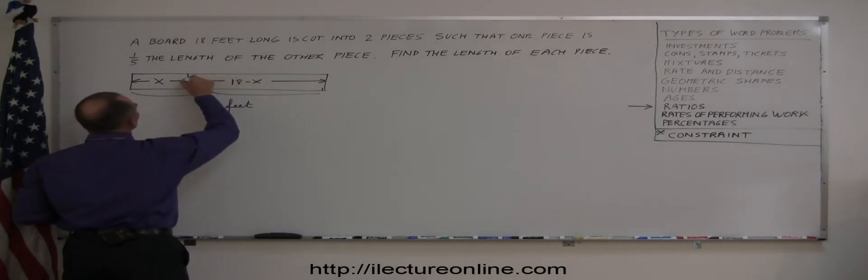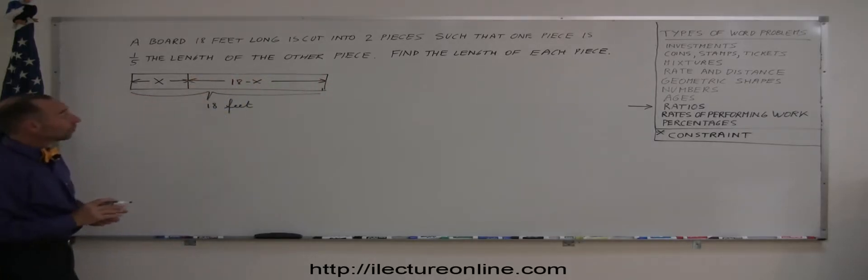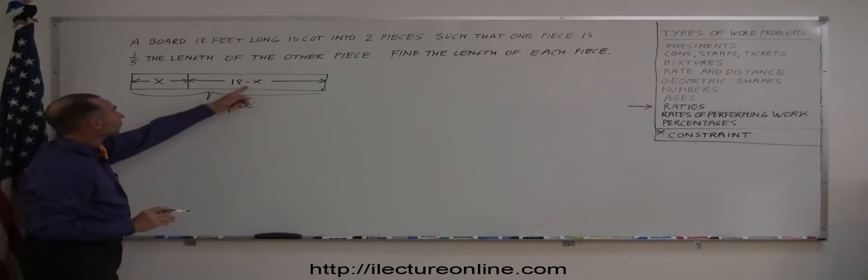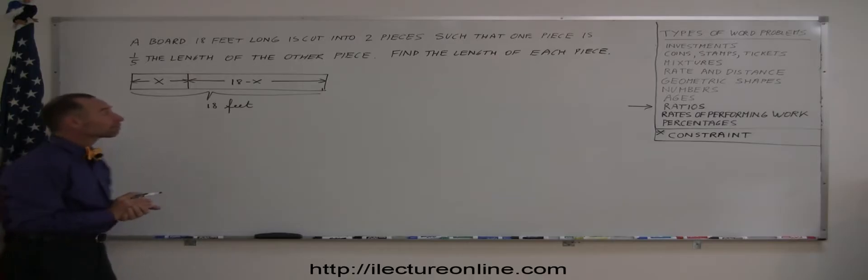the long piece and then the problem says that the long piece is five times as big as the short piece or the short piece is one-fifth the length of the big piece. Alright, so we then write,